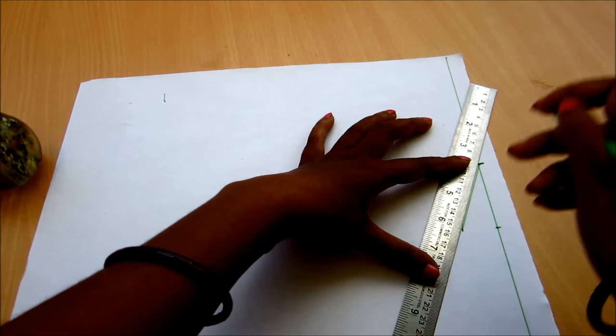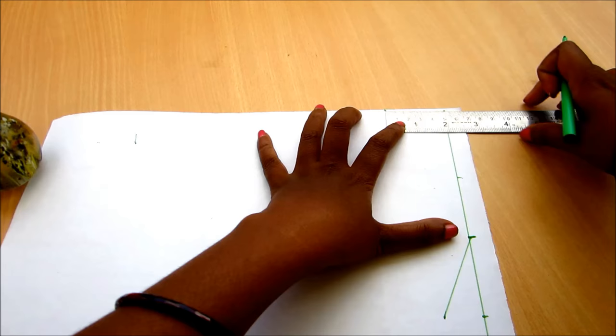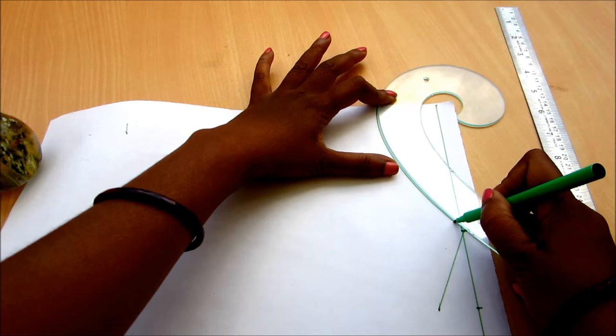I'll be drafting the boat neckline. Mark the shoulder length of seven and a half inches, and on that line I'll be marking the shoulder line of two and a half inches. Mark the shoulder slope one inch, connect that to the neckline, and the back neck deep I'll be marking two inches. Connect that to the neck length measurements.